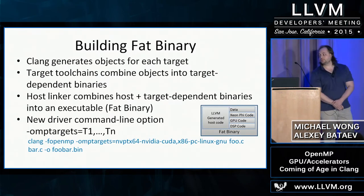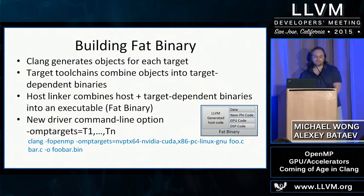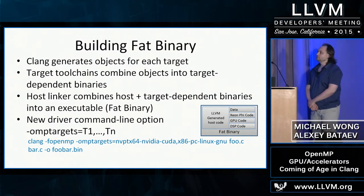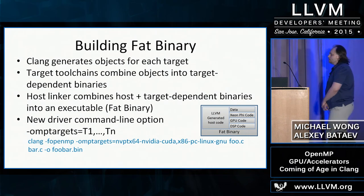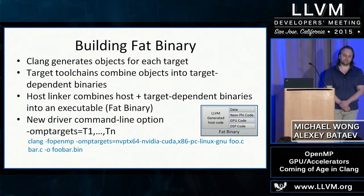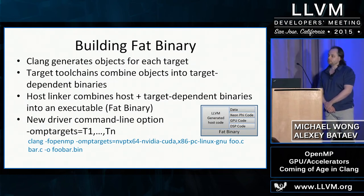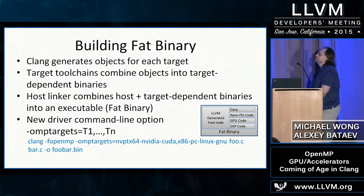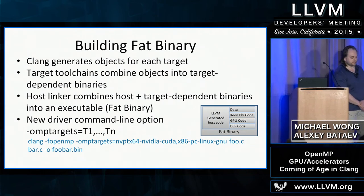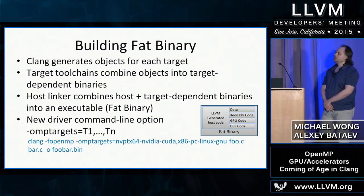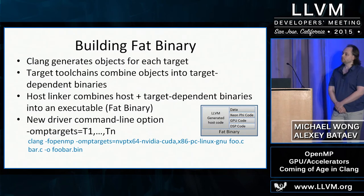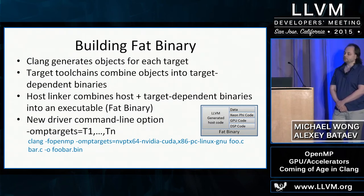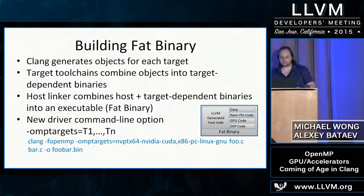To make this work, we need to build a multi-target binary. Clang must generate object files for each target device, the target toolchain combines these into target-specific binaries, and the host linker combines those binaries with host object files into a single multi-target executable. This requires a new driver option `-p targets` with a list of additional target devices. For example, you can generate code for both NVIDIA and Xeon Phi simultaneously with this driver option.